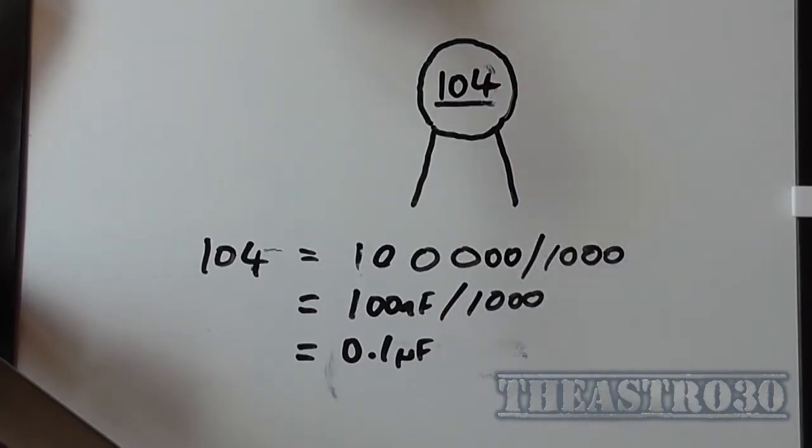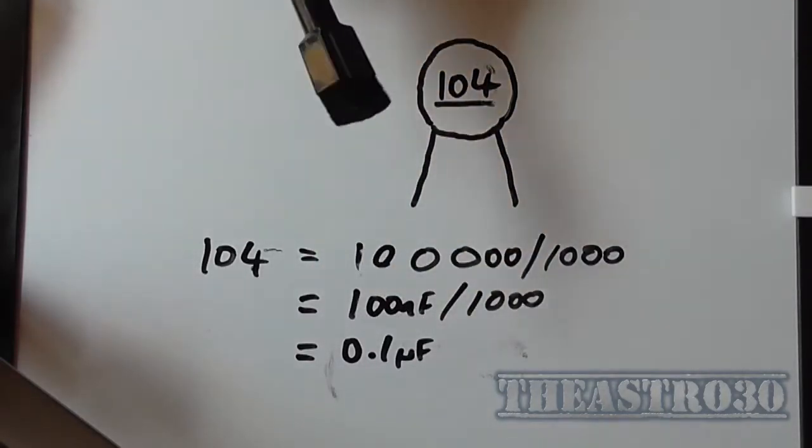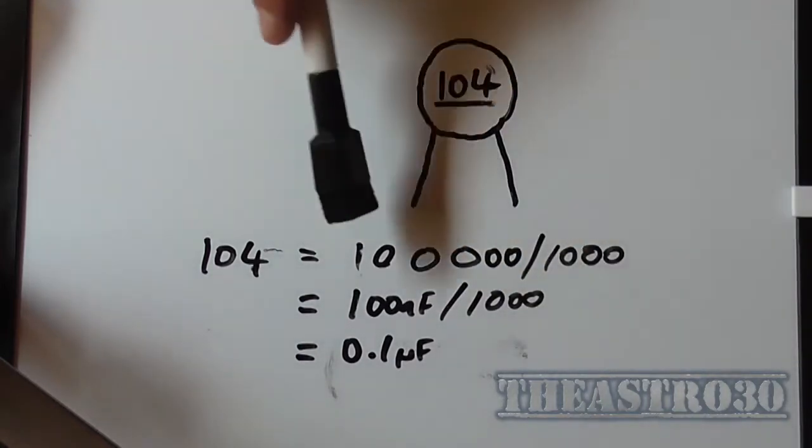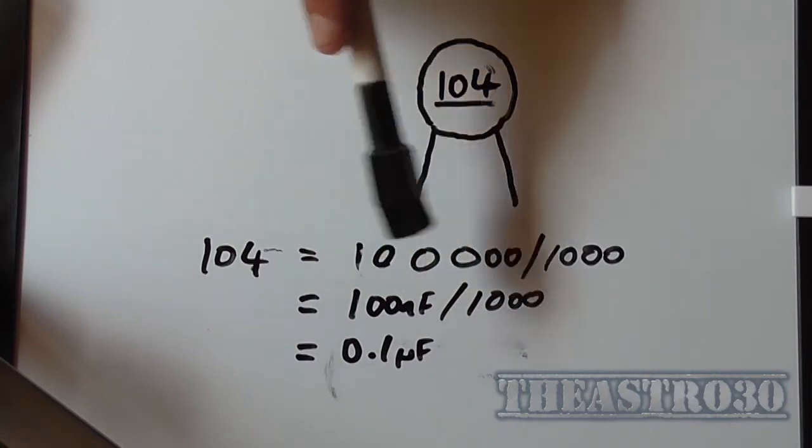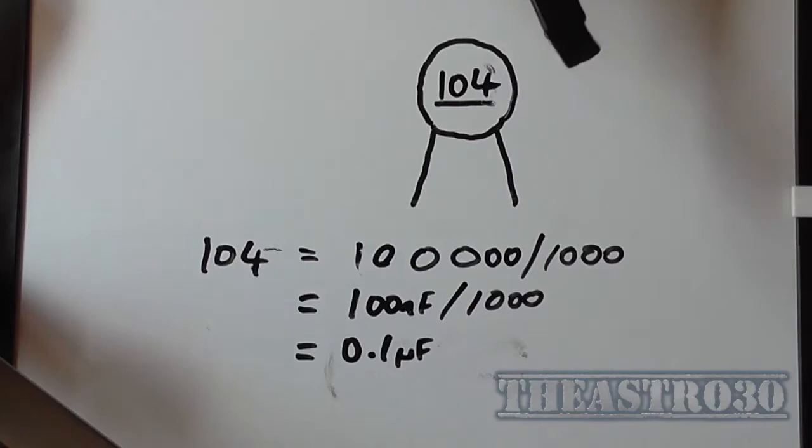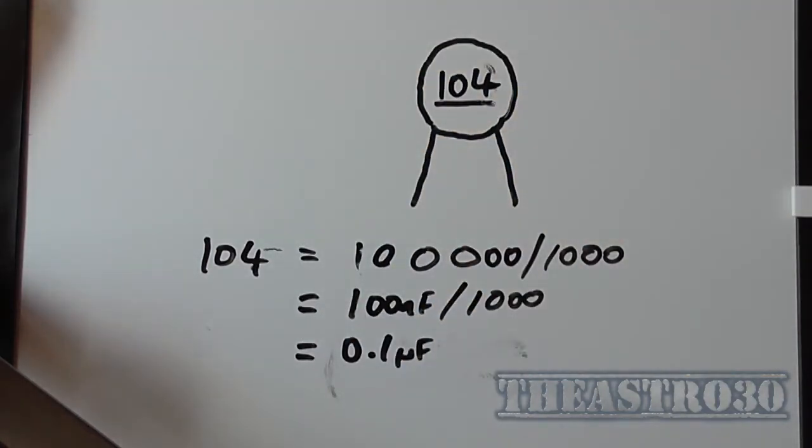So now I've changed the value to 104, so now it's one and zero, so 10 with four zeros after it—zero zero zero zero. One, two, three, four. That's 100,000 picofarad. Divide that by a thousand gives us 100 nanofarad. Divide that by a thousand equals 0.1 microfarad.